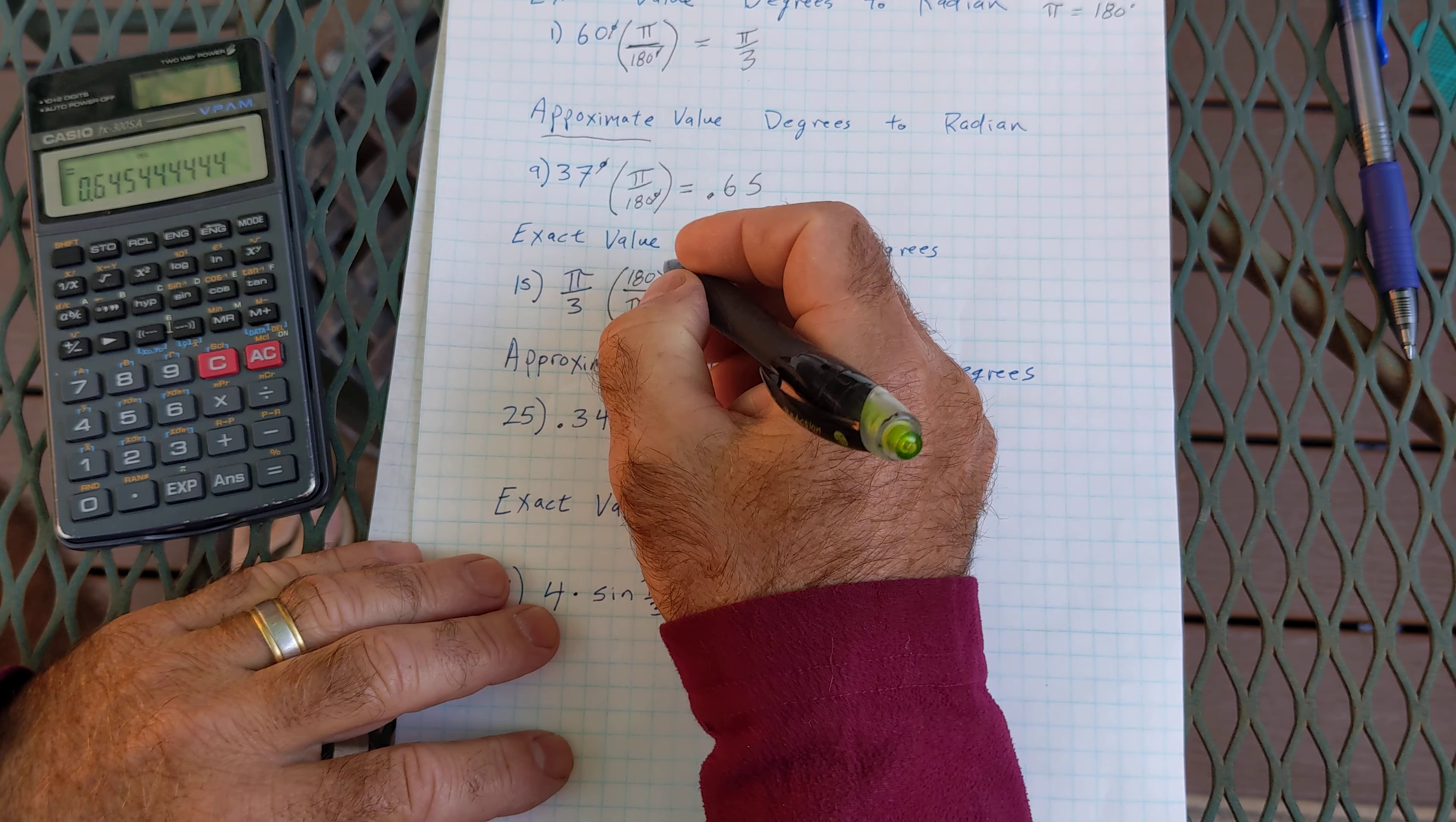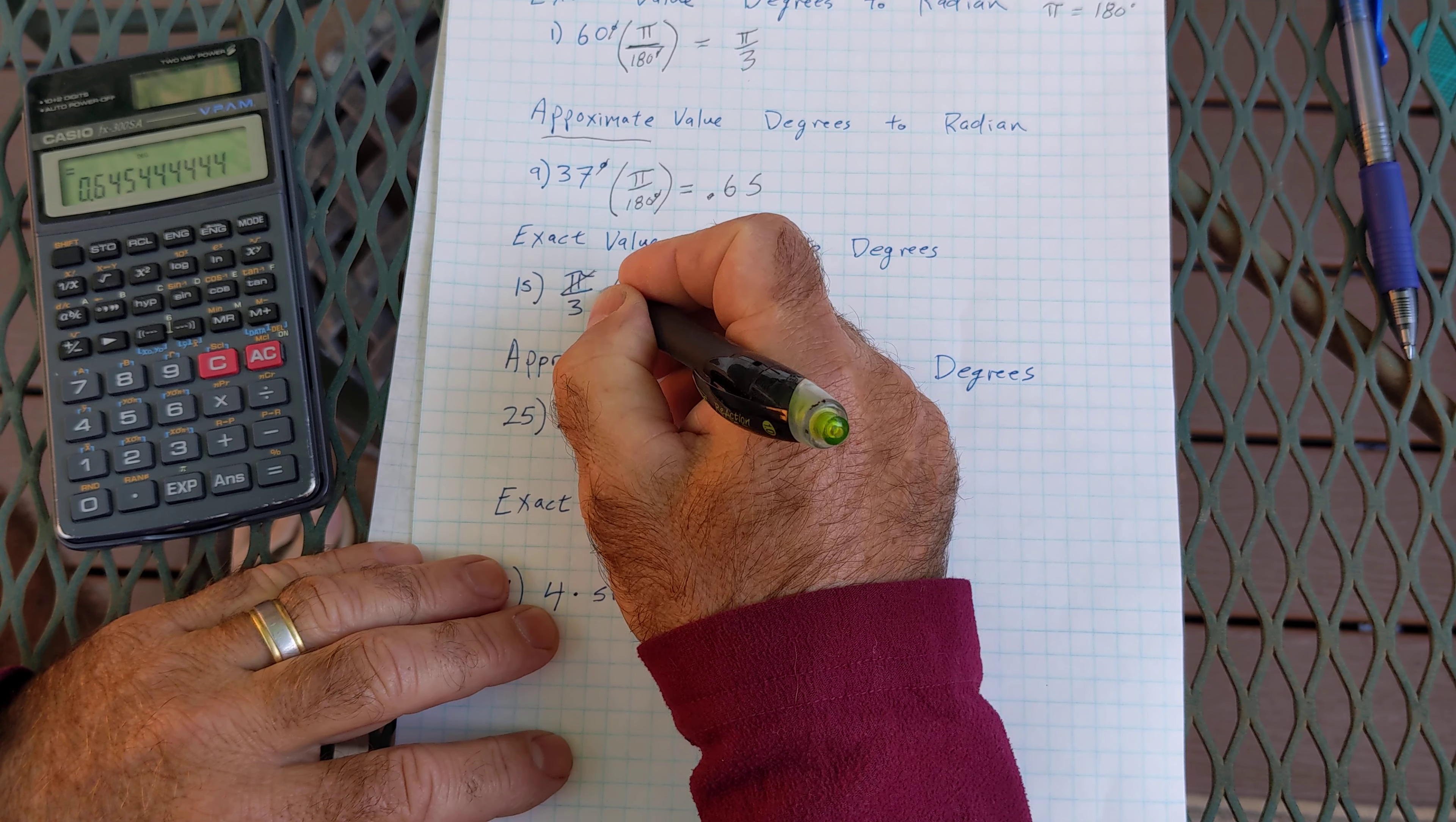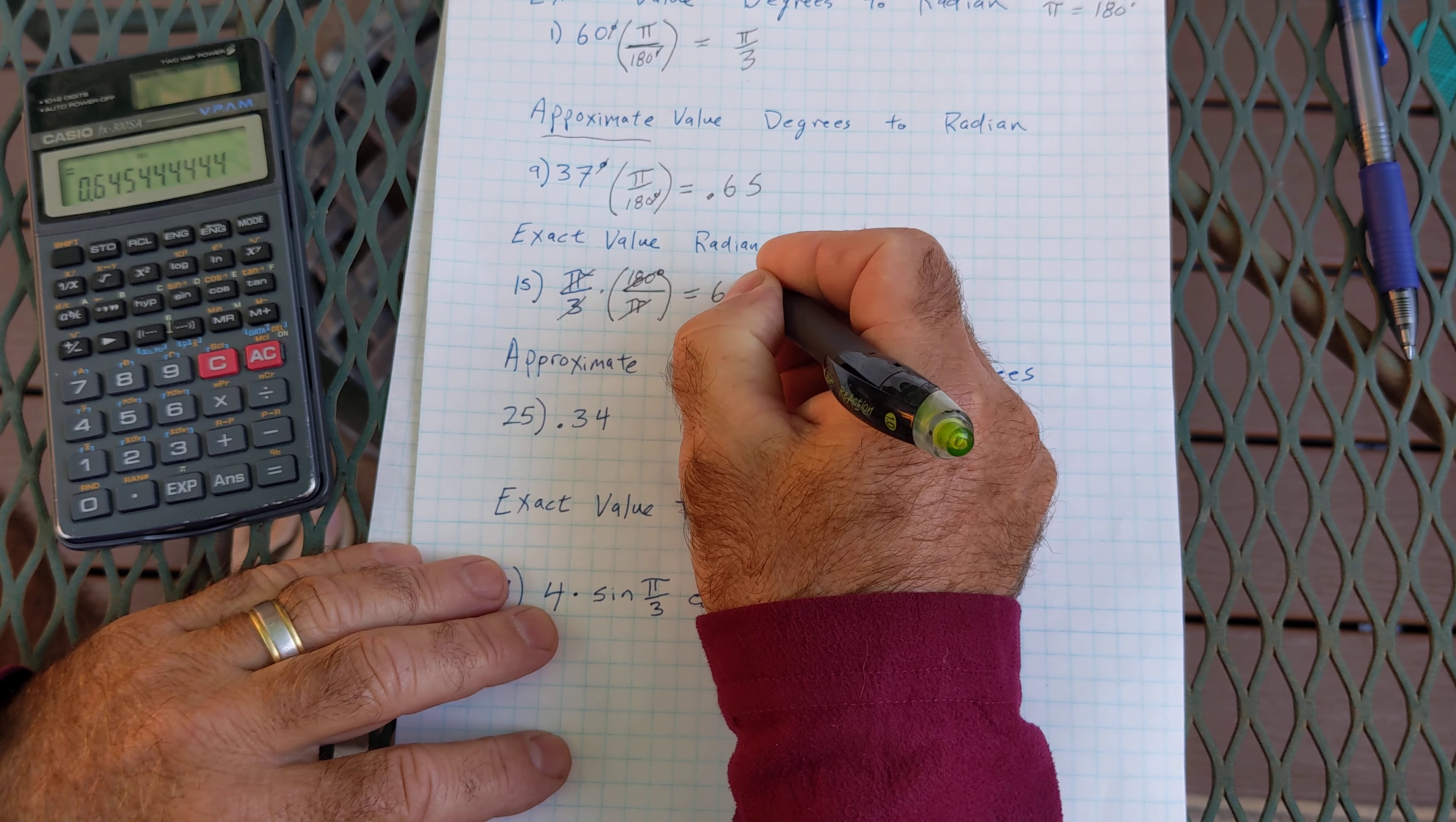This is pi over 3. This is 180 degrees over pi. My pi's cancel. I'm multiplying fractions. 3 goes in here once and in here 60 times. And I have degrees there, so I have 60 degrees.